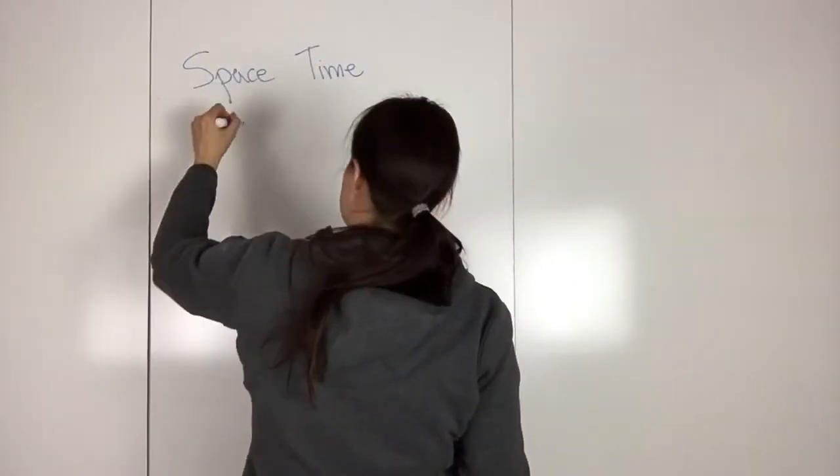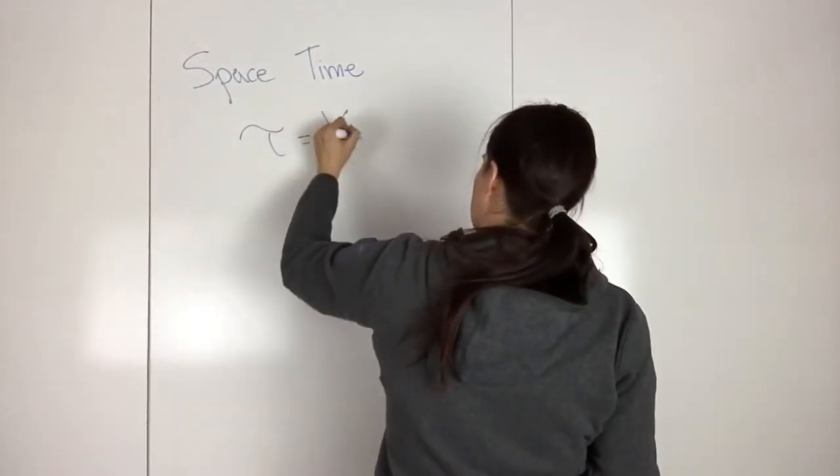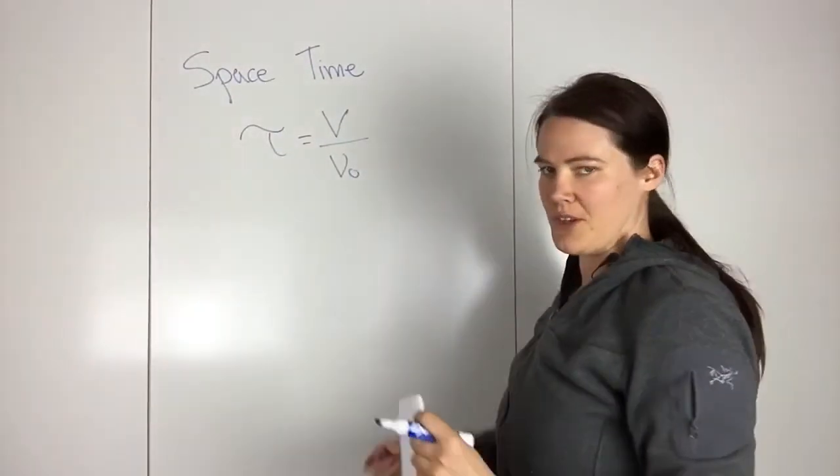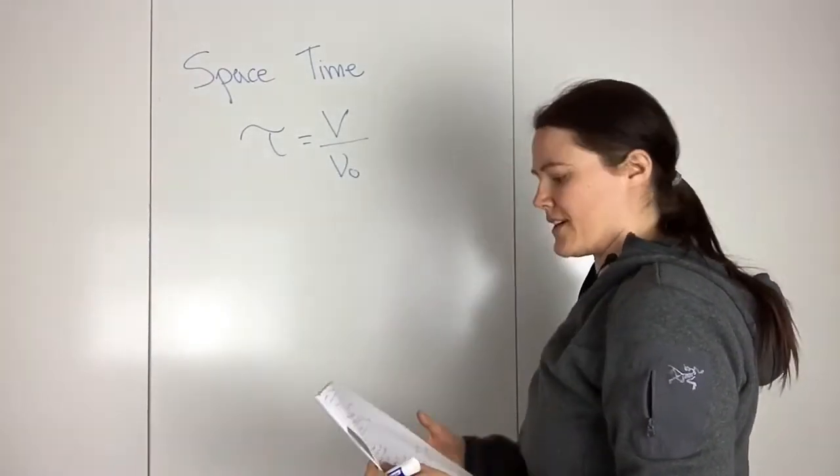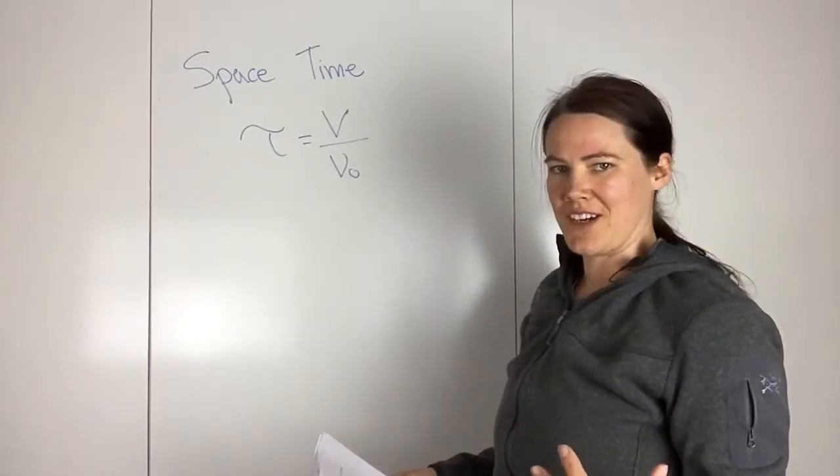Space time is tau, which equals V over V naught. So tau is your volume over the volumetric flow rate, and what this is measuring is the time necessary to process one reactor volume.